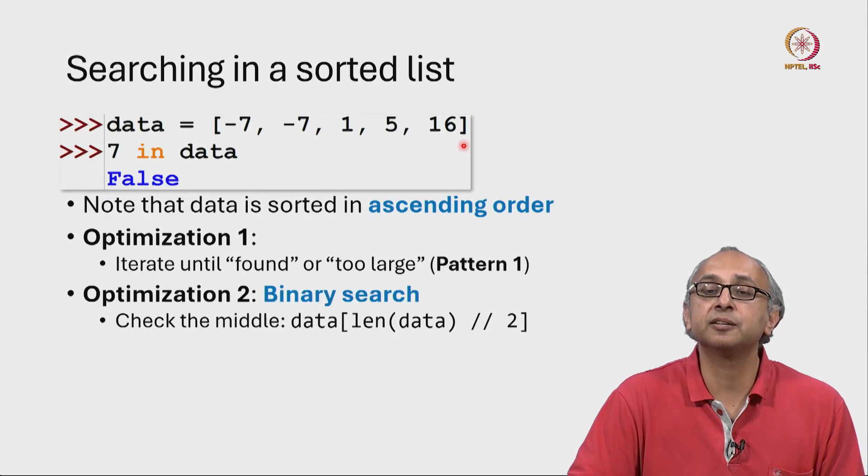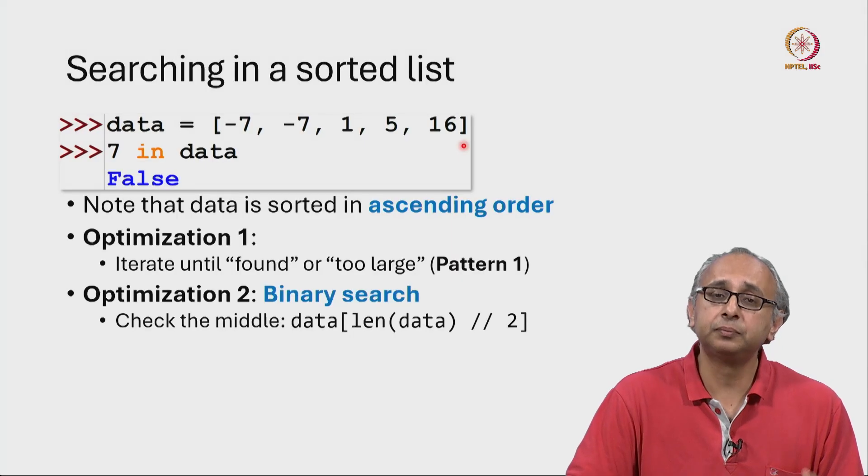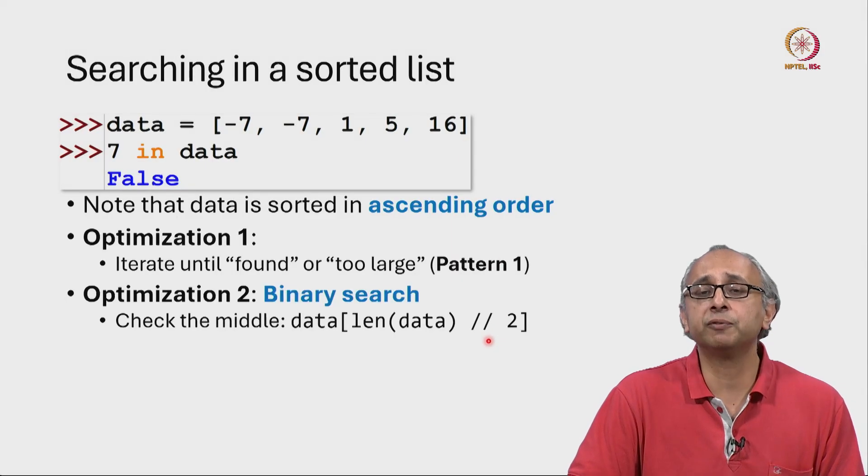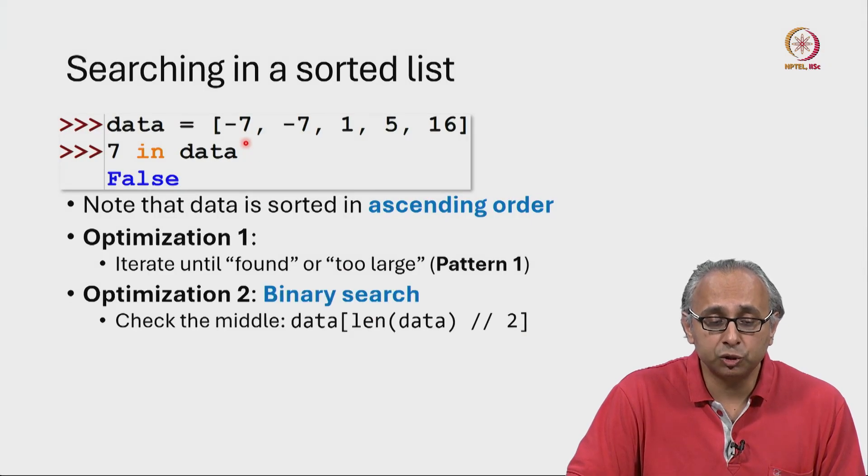the length of this list is 5. There are five integers in this list. So 5 floor division 2 is of course 2, so we would look at index 2.